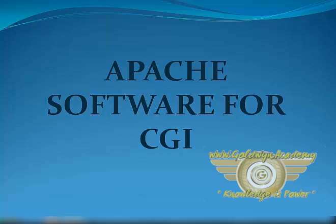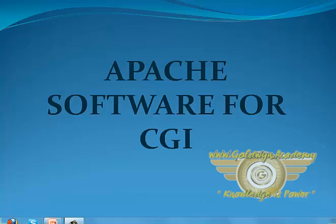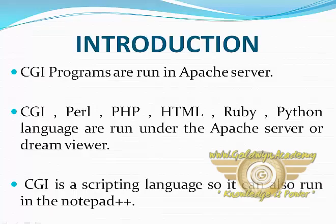Hello friends. In the last tutorial we have seen the features of CGI and the message format of a CGI language. In this tutorial we learn about the approaches of CGI and the Apache server, which will be used to run languages like CGI, Python, Ruby, etc. First we will see the introduction of the Apache server.